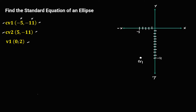For the second co-vertex, x is positive 5 and y is negative 11. Counting to positive 5 on the x-axis, this gives us the coordinate of the second co-vertex at (5, -11).